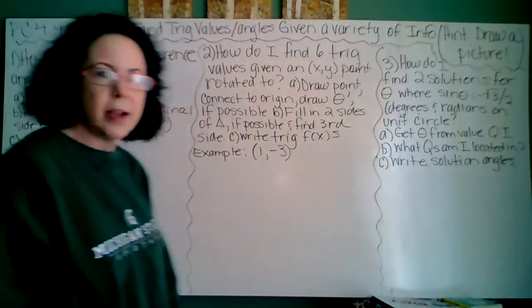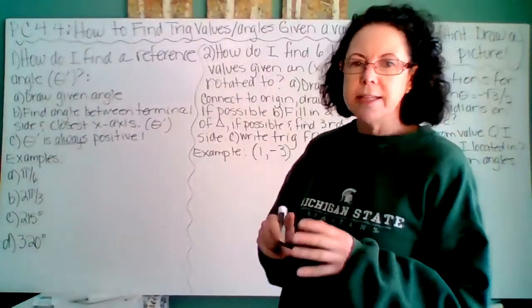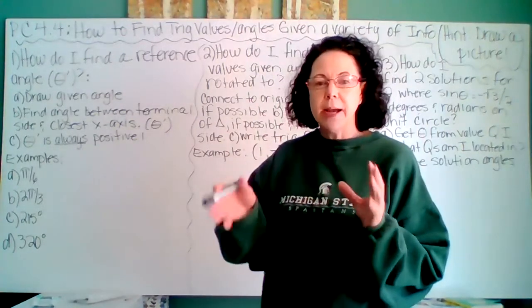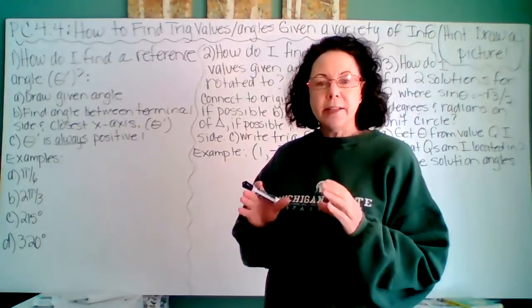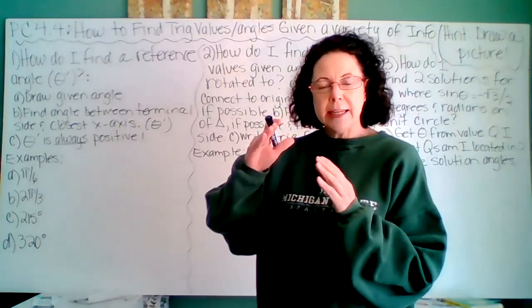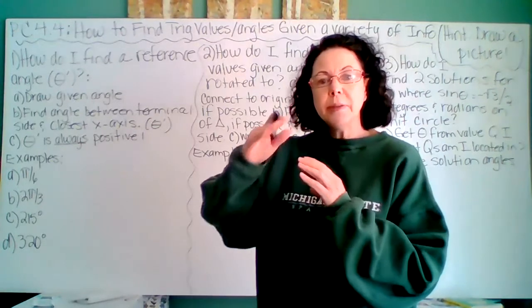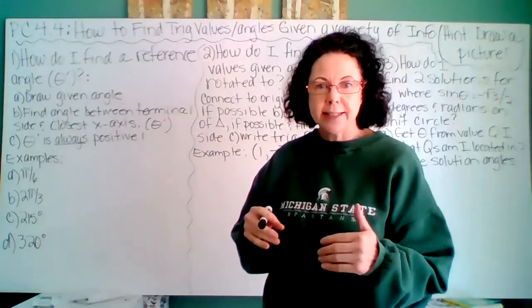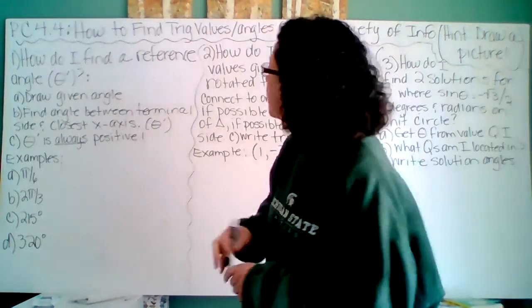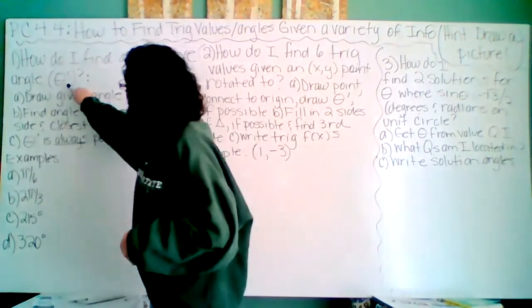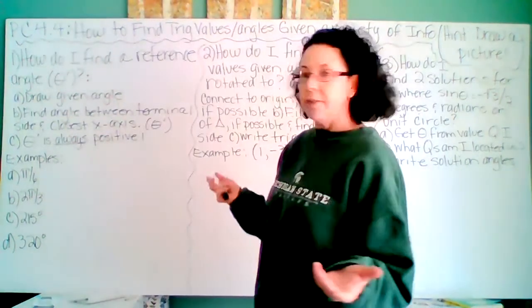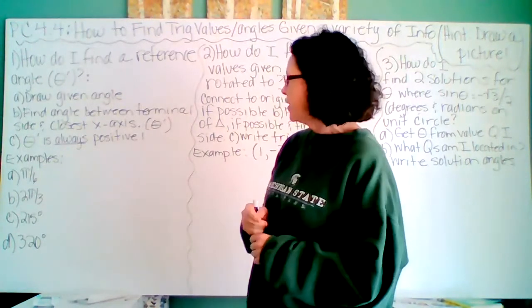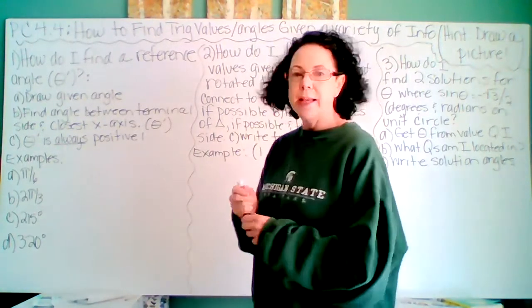So let's look at number one: how do you find a reference angle? A reference angle is always positive. When you rotate any angle — either in a positive or negative direction — it is wherever your terminating side is; it is the angle between your terminating side and the closest x-axis. We call that theta prime. Draw the given angle, find the angle between your terminal side and the closest x-axis, and it's always positive.